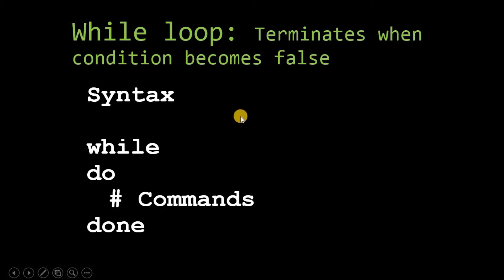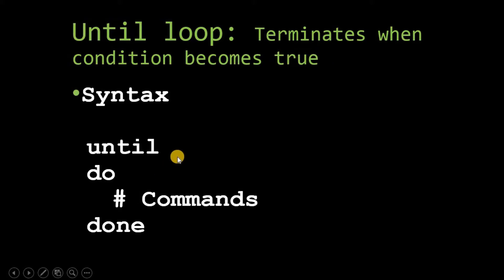The while loop terminates when the condition becomes false. For example, 'while i less than 10' — whenever i becomes greater than or equal to 10, the loop will break. In contrast, the until loop terminates when the condition becomes true. The syntax for until is the same as while; only the keyword and the type of condition change. We will understand this with an example.